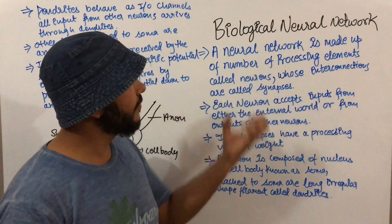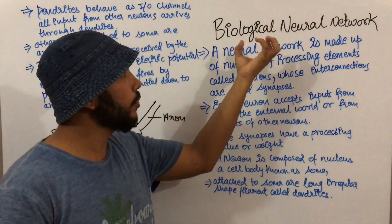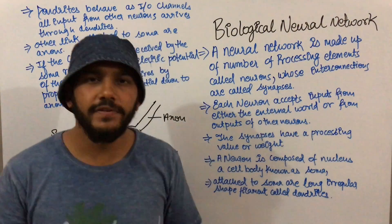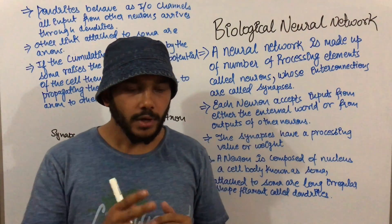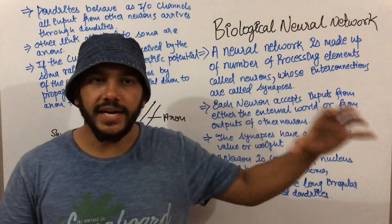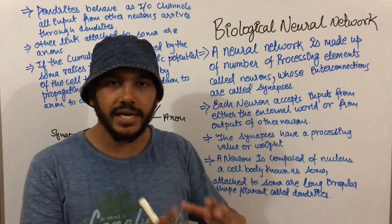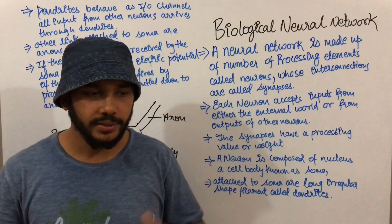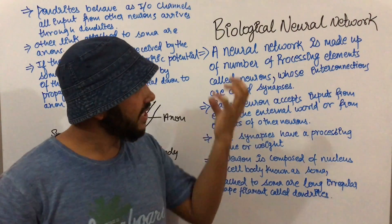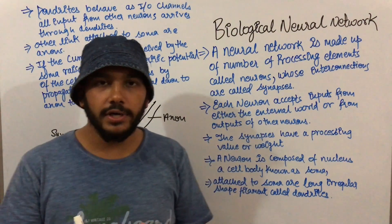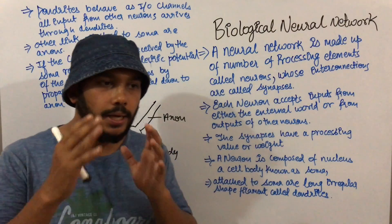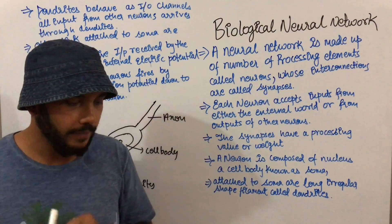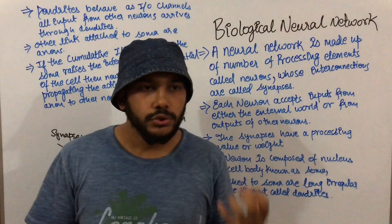In this video I'm going to talk about biological neural networks. Previously we discussed that in traditional computing, or hard computing, we solve problems in a sequential manner, that is line by line. But in neural networks, our problem solving is parallel and distributed — we can do two or three tasks simultaneously.